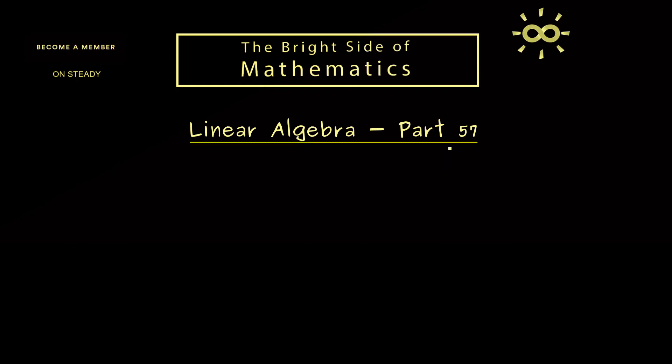In today's Part 57 we continue our discussion about eigenvalues and eigenvectors of matrices. In particular, today's topic will be about triangular matrices and block matrices. It turns out that the spectrum, the set of eigenvalues, can easily be calculated for these matrices.